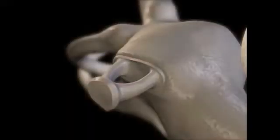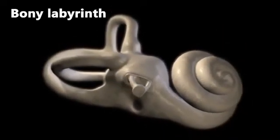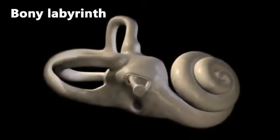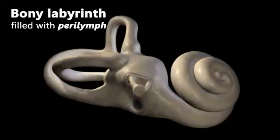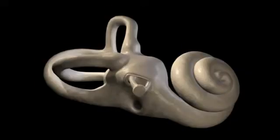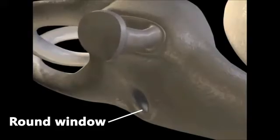The stapes moves with a piston-like action, which sends vibrations into a structure called the bony labyrinth. The labyrinth is filled with a fluid called perilymph. Due to the flexibility of a membrane called the round window, the stapes movement can displace the perilymph, allowing vibrations to enter the labyrinth.